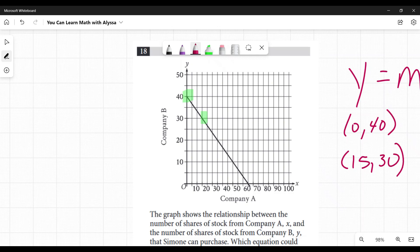So change in y over change in x, rise over run. Let's go from this to there. I'm going down 10 and then to the right 15. My change in y is negative 10, and my change in x is 15. That's negative 10 over 15, which I can simplify to negative 2/3.